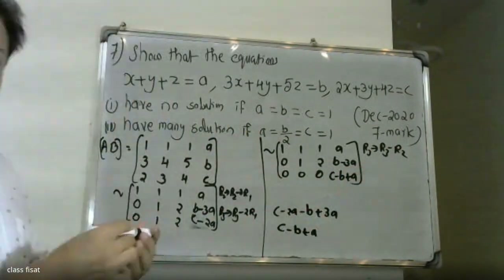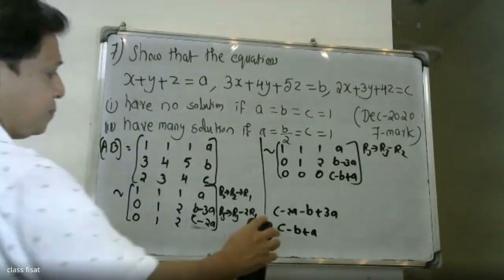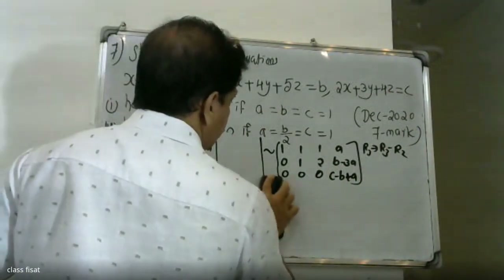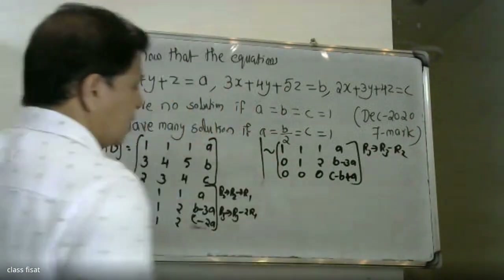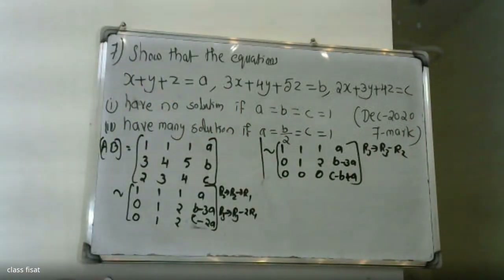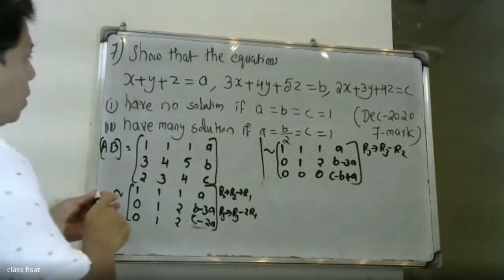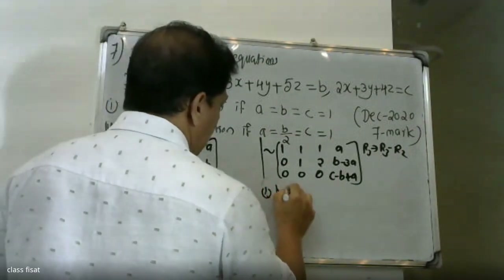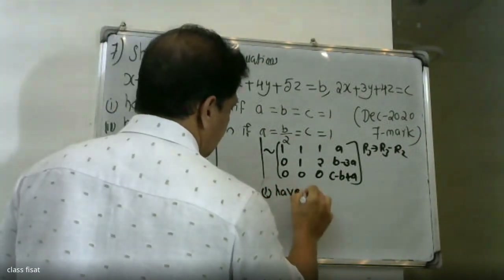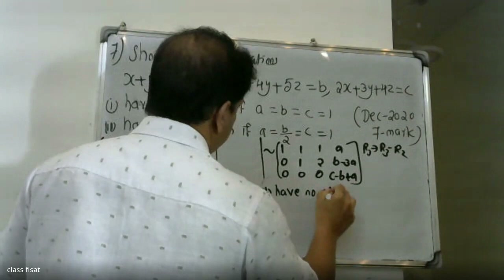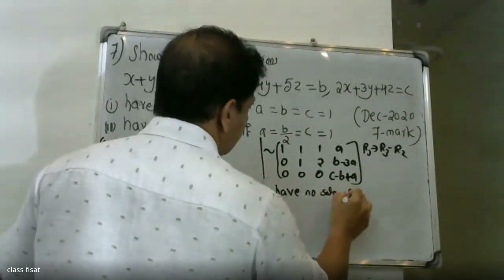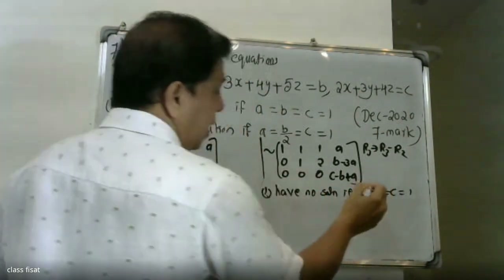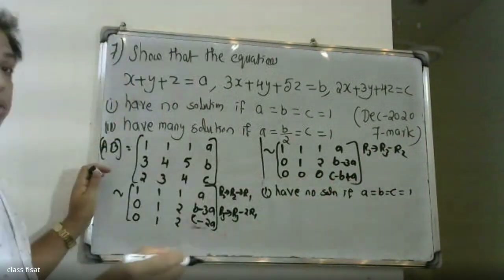Now we have the echelon form. We have two questions to answer: how to show no solution, and the condition a equals b equals c equals 1.